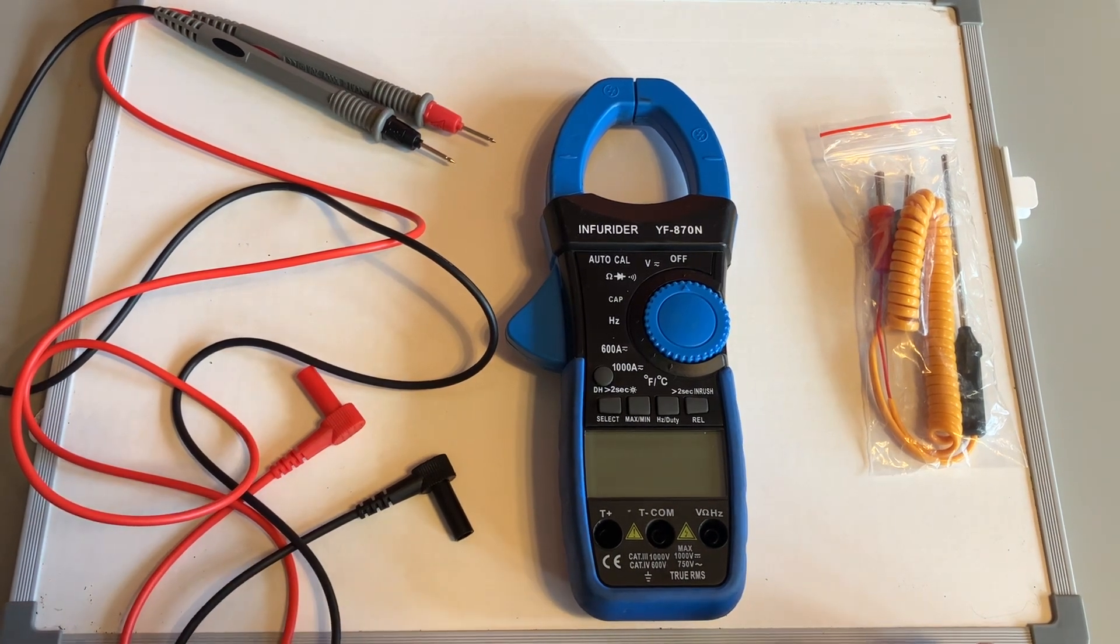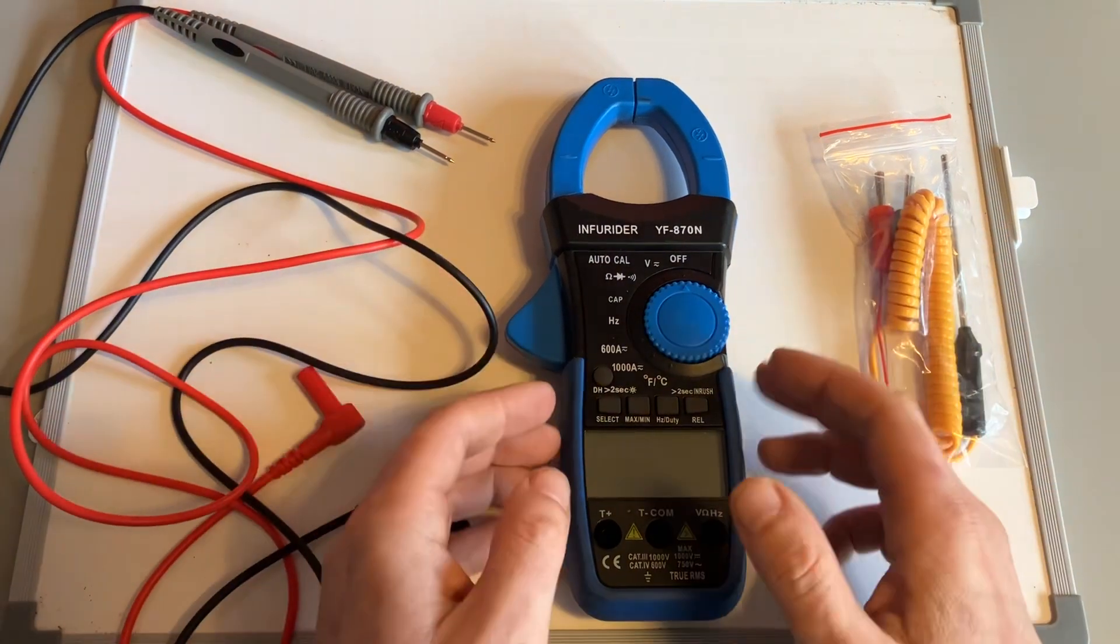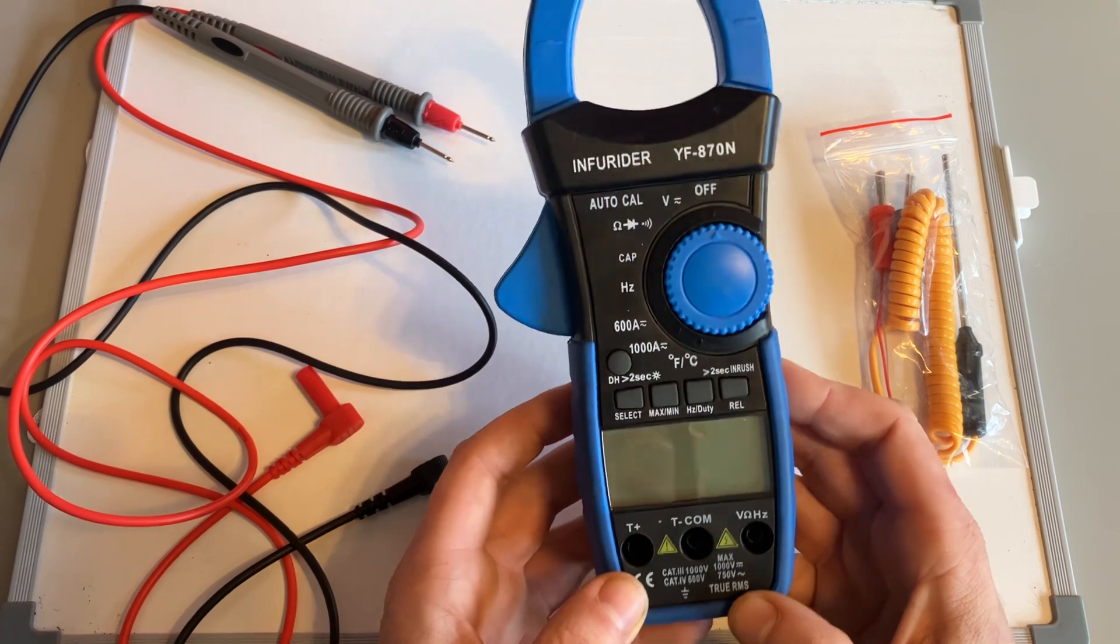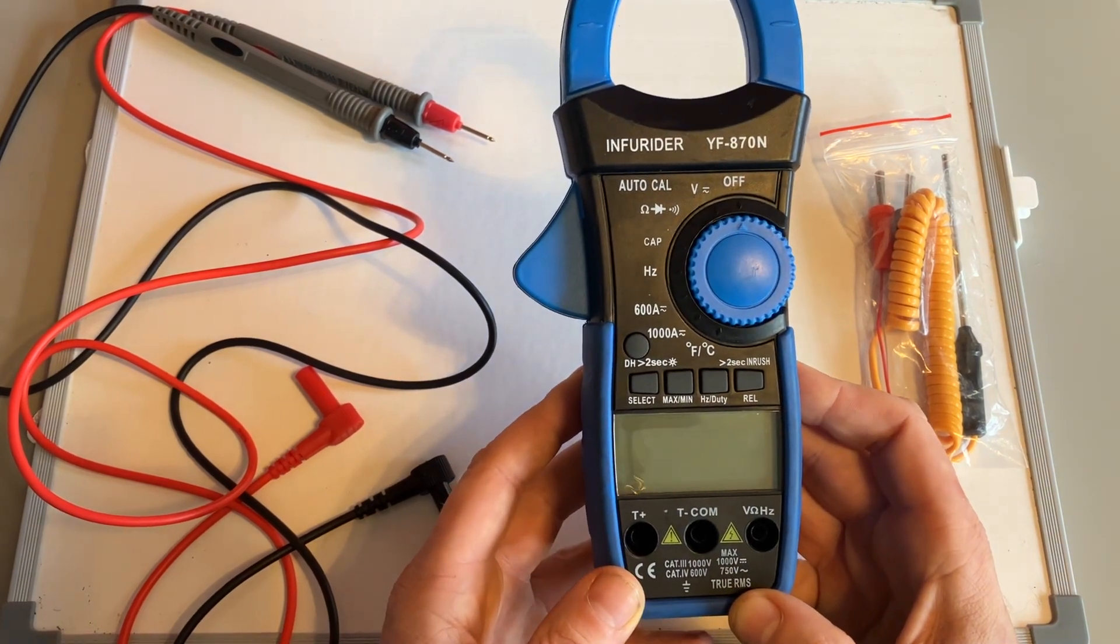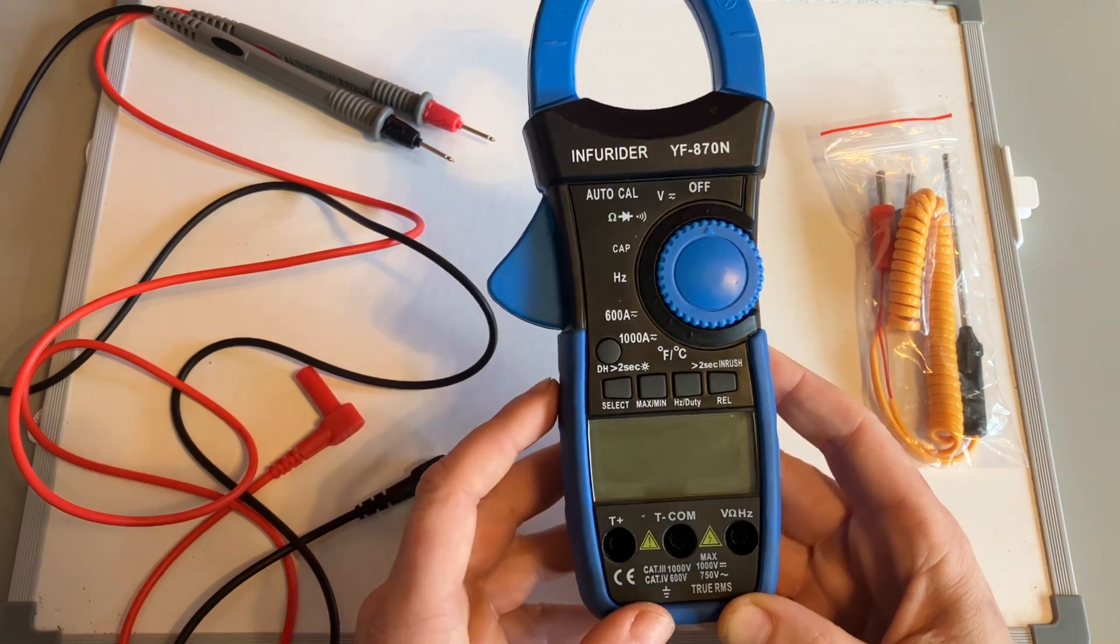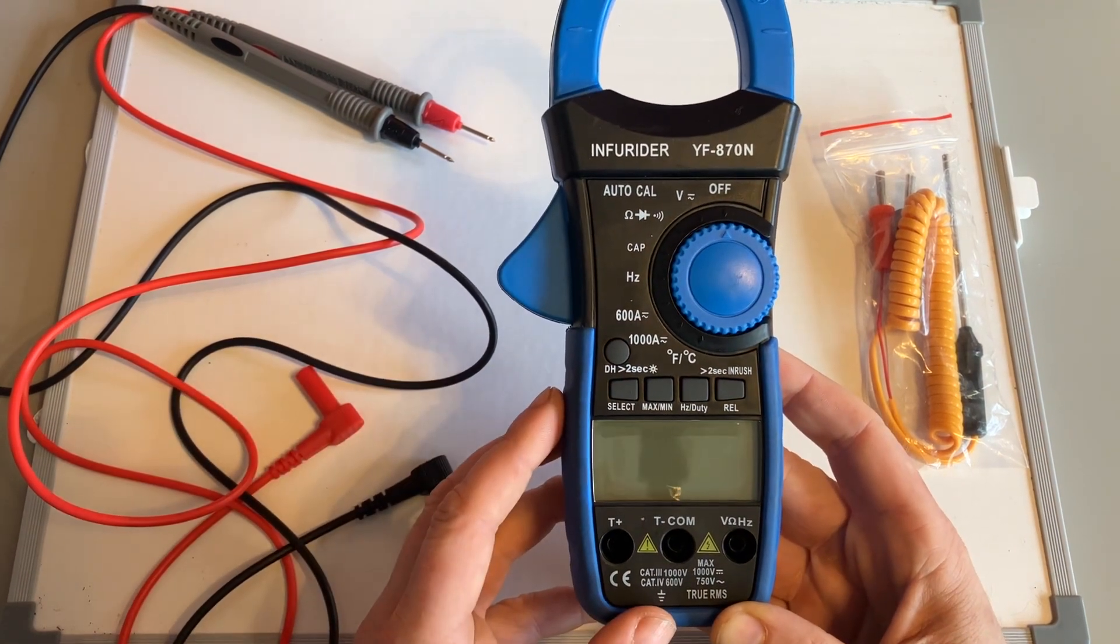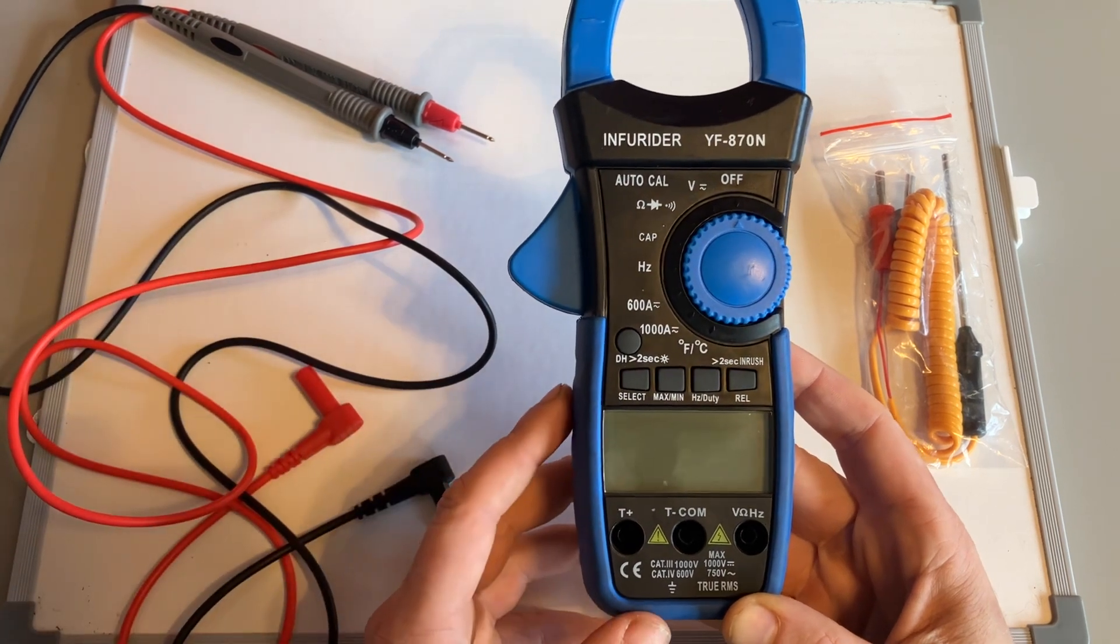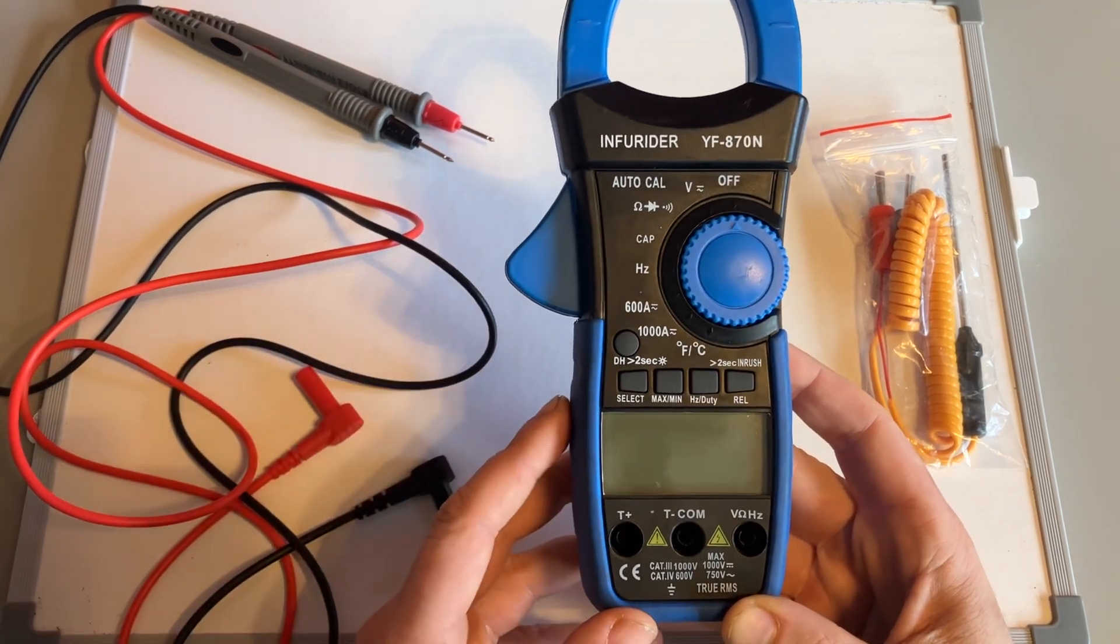With this particular one that I've bought, the first thing you want to look for is whether you're going to need a DC amp clamp or not. The cheap ones will do AC which are perfectly fine if you're dealing with property electrics and anything to do with AC voltage.